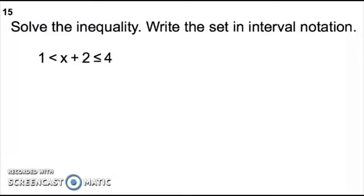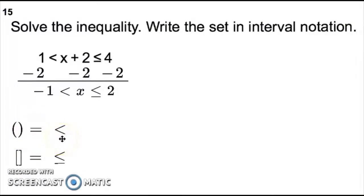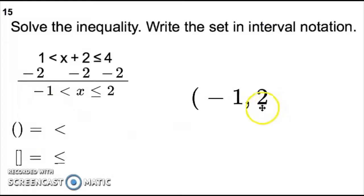Number 15: solve the inequality and write the solution set in interval notation. Subtract 2 from everything, giving us negative 1 is less than x is less than or equal to 2. In interval notation: the left endpoint is negative 1 with no equal to, so use a parenthesis; the right endpoint is 2 with a line under it, so use a bracket. The answer is negative 1 parenthesis comma 2 bracket.